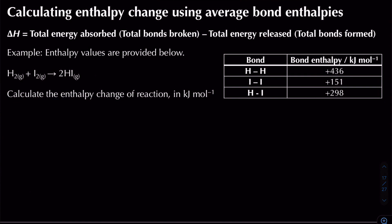To calculate enthalpy change using average bond enthalpies, take the total energy absorbed (total bonds broken) and subtract the total energy released (total bonds formed). In this example, enthalpy values are provided and we're asked to calculate the enthalpy change of reaction in kilojoules per mole.